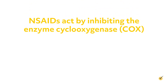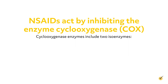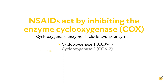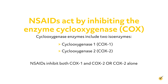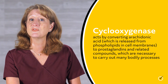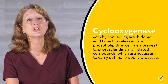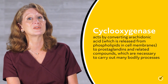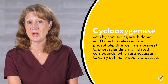NSAIDs act by inhibiting the enzyme cyclooxygenase, or COX. Cyclooxygenase enzymes include two isoenzymes: cyclooxygenase 1, or COX-1, and cyclooxygenase 2, or COX-2. NSAIDs inhibit both COX-1 and COX-2, or COX-2 alone. Cyclooxygenase acts by converting arachidonic acid, which is released from phospholipids in cell membranes, to prostaglandins and related compounds, which are necessary to carry out many bodily processes.